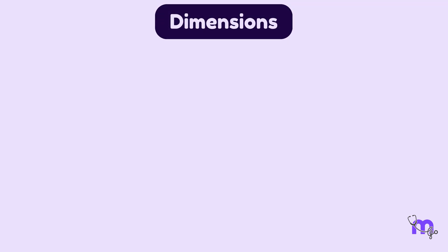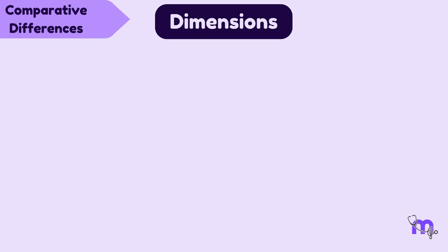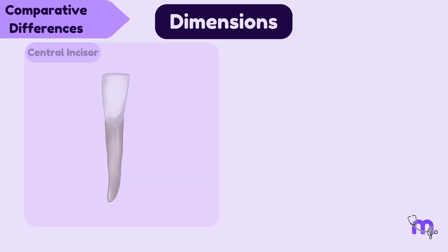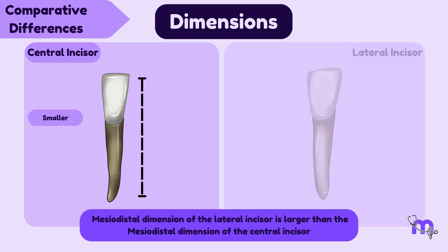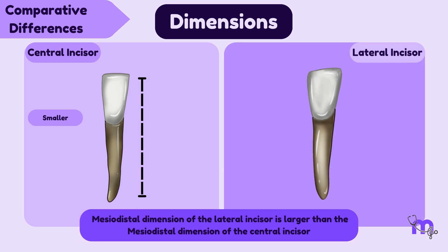Let's begin by looking at their dimension, which is a comparative difference. It's important to note that the mandibular central incisors hold the distinction of being the smallest teeth in the permanent dentition. Unlike the maxillary counterpart, the mandibular lateral incisor is slightly larger than the mandibular central incisor.